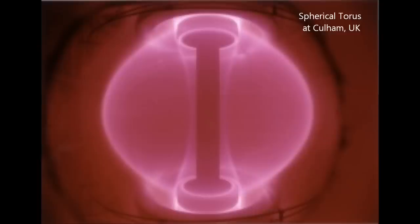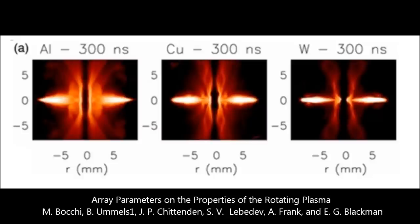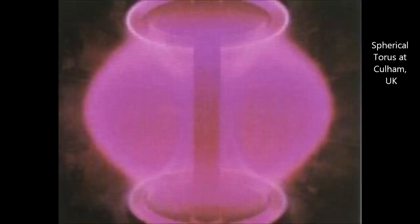The array parameters on properties in rotating plasma fields, depending on the metal of the wire. The shape's the same, it comes with that X coming off the limbs there. A closer look at the spherical torus from Callum in the UK.